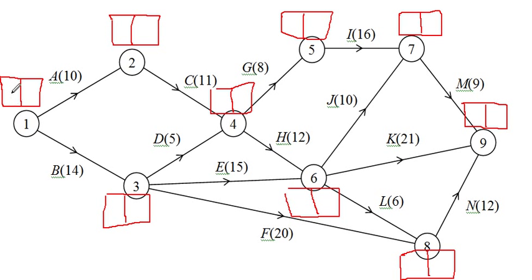The earliest time we can be at one - one is ready to start A and B, and the earliest time we can be there is time zero. Node two: A takes ten, so the earliest time we can be at two is ten. Next is three - B takes fourteen, so the earliest time we can be at three is fourteen.